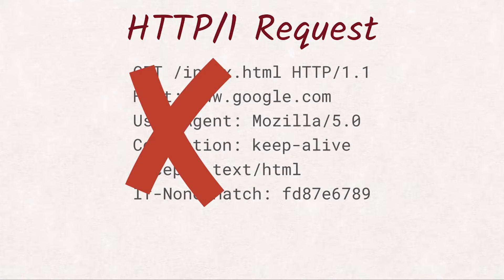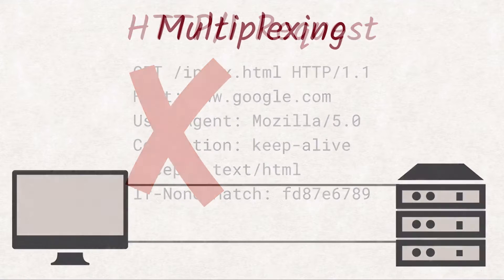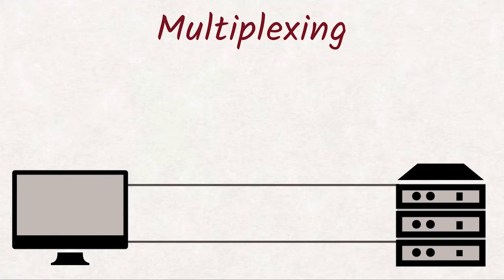Don't worry though — tools like Wireshark or DevTools will still let you see headers, even with HTTP/2. The second big problem HTTP/2 solves is head-of-line blocking. It does this through a technique called multiplexing.